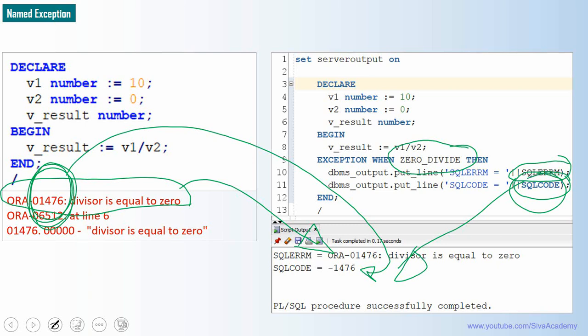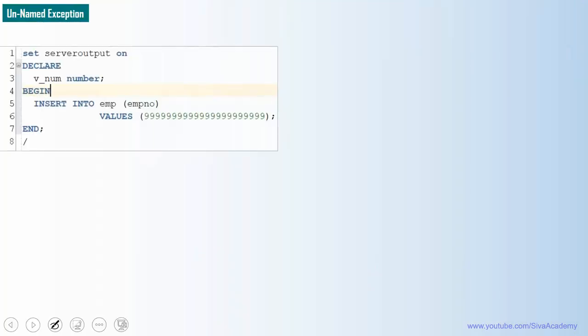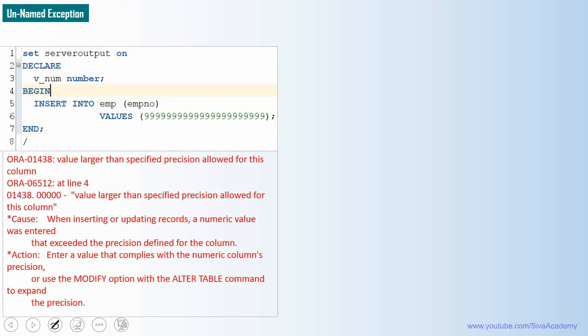Let us see one more example for unnamed exception category. Here's a simple PL SQL block. When you're trying to insert a value more than the defined limit for a column, we'll be getting an error saying value larger than specified for this column. So this is an unnamed exception. If you want to handle this unnamed exception, typically we'll be using the others category. Otherwise, we can give a name to this particular exception using pragma exception init, which we saw in detail in the previous videos.